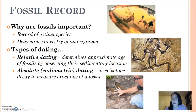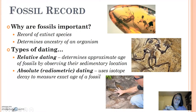Relative dating — think about it, relative, general — it just determines the approximate age of a fossil. Absolute, or radiometric dating, uses actual isotope decay to find out the exact age of a fossil.